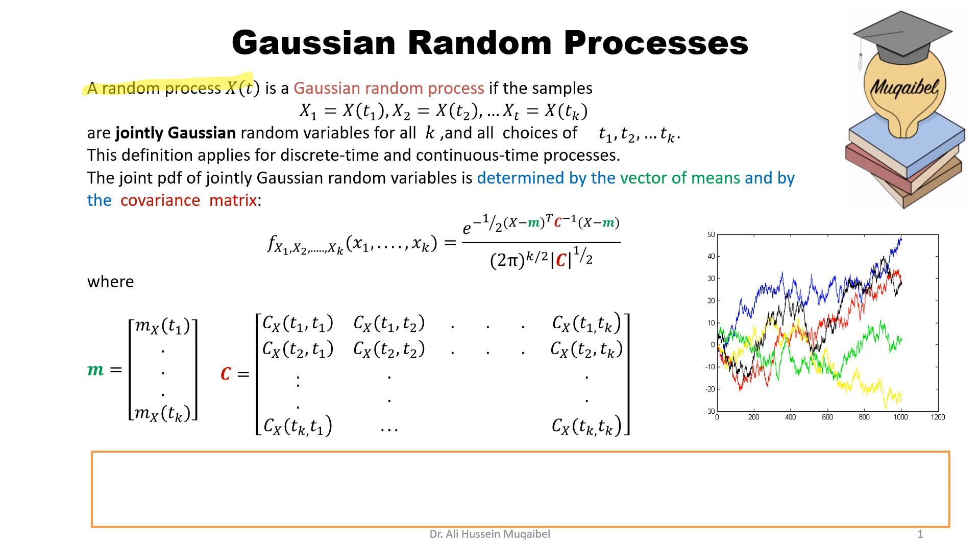If the samples taken at different instances of time are jointly Gaussian, remember that looking at the Gaussian process at a given time makes it a random variable. So we require that the process at every instant of time be Gaussian, and it's jointly Gaussian between all the different times.